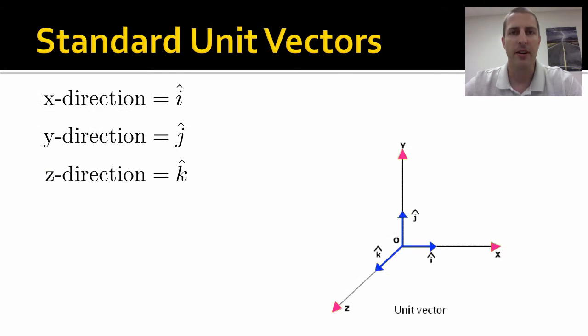Now there's some standard unit vectors. x, y, and z are our typical directions, so we have typical unit vectors for those. X is i, y is represented by a unit vector j, and z is represented by a k, and we write that as i hat, j hat, and k hat. That way we can represent all three directions, and anything in between if we combine the vectors.